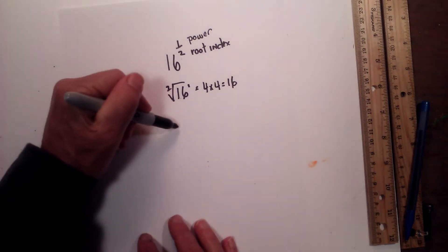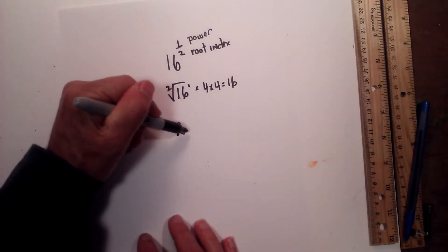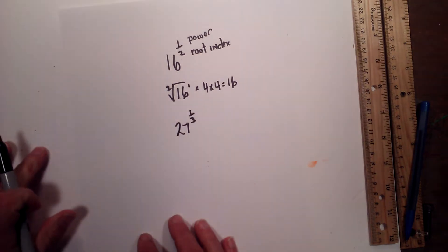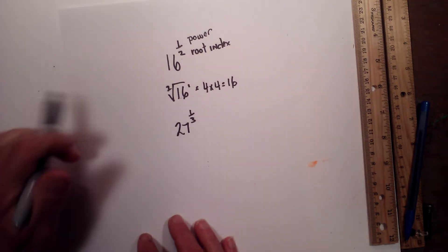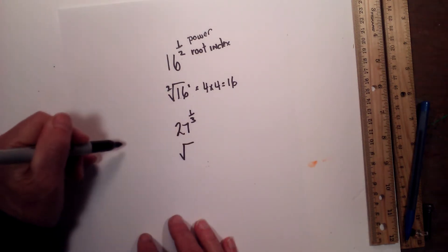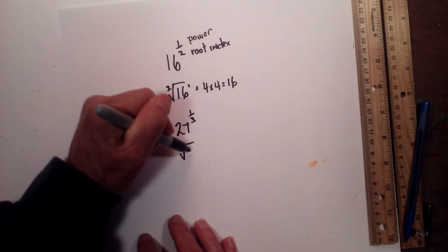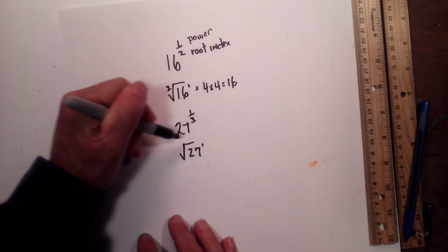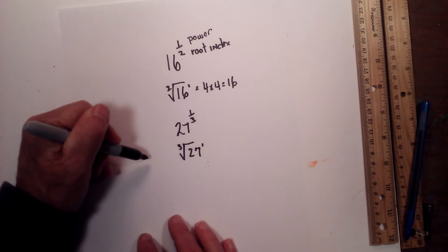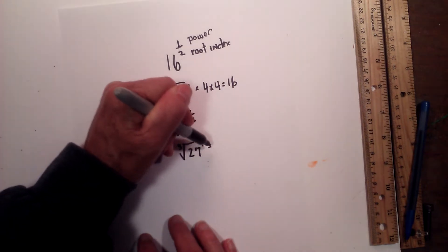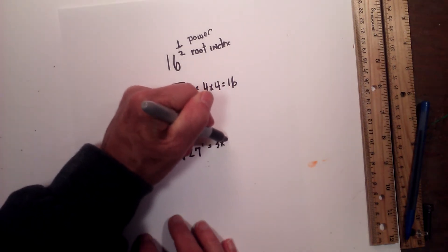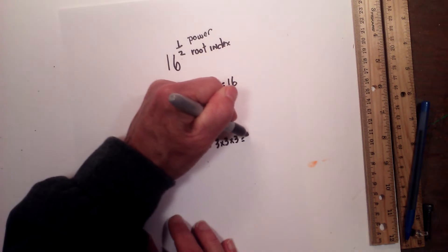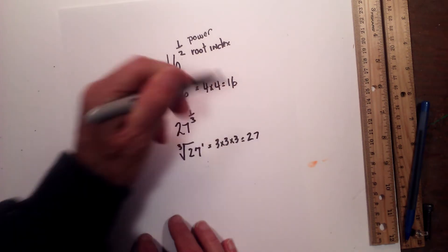Let's look at another example: 27 with an exponent of 1/3. I'll write the radical symbol — the radicand is 27 to the first power, and the root index is 3. 3 times 3 is 9, times 3 is equal to 27.